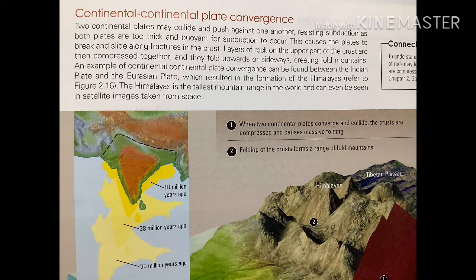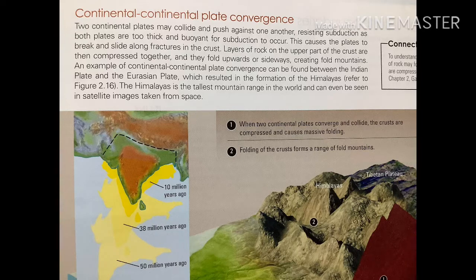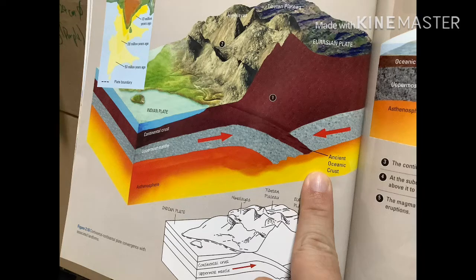For continental-continental convergence: when continental plates meet one another, they are both buoyant and will not subduct. The example used is where the Indian plate meets the Eurasian plate. Over many millions of years, two buoyant continental plates meeting will push together and force upward folding — massive and impressive — forming very large fold mountain ranges. The Himalayan mountain range, where you can find Mount Everest, the highest peak on earth, is the result of this boundary. There is no subduction when continental plates meet continental plates — none at all. If you see a diagram showing subduction at this boundary, it is technically incorrect; do not draw it.